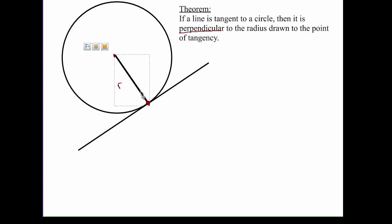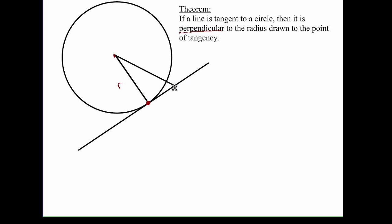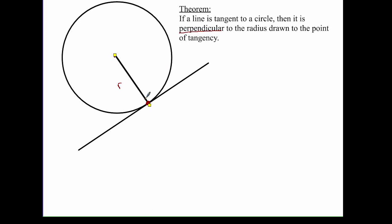If I think about the radius and this segment intersecting the point of tangency, and I move this segment along the tangent line, any other point I stop at — say I stop here — the distance from the center to that other point on the tangent line would be longer than the radius, because I'm going from the center to the circle and then a little bit more. So really the shortest distance from the center to this tangent line is this single point of tangency, and that truly is the definition of being perpendicular — this is a perpendicular segment.